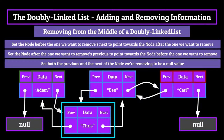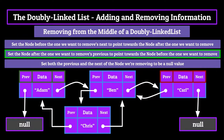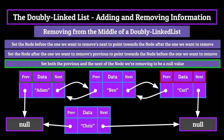Let's delete the chris node. First, we set the atom node's next to point towards the ben node. Then we set the ben node's previous to point towards the atom node. Finally, we set the chris node's pointers to point towards null values. Because no nodes point towards it and it doesn't point towards any nodes, the chris node is essentially deleted. The list is back to its original form.